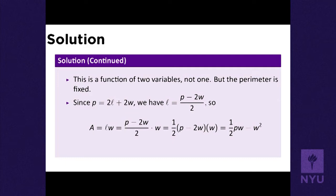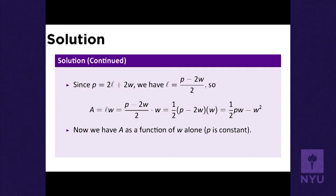Plugging that into the area equation, I get length times width, or (perimeter minus twice the width) divided by two, times the width. I can write this as one-half P times W minus W squared. This still looks like a function of two variables because we have two letters P and W, but perimeter P is fixed — P is a constant and W is the only variable. So A is just a function of W.